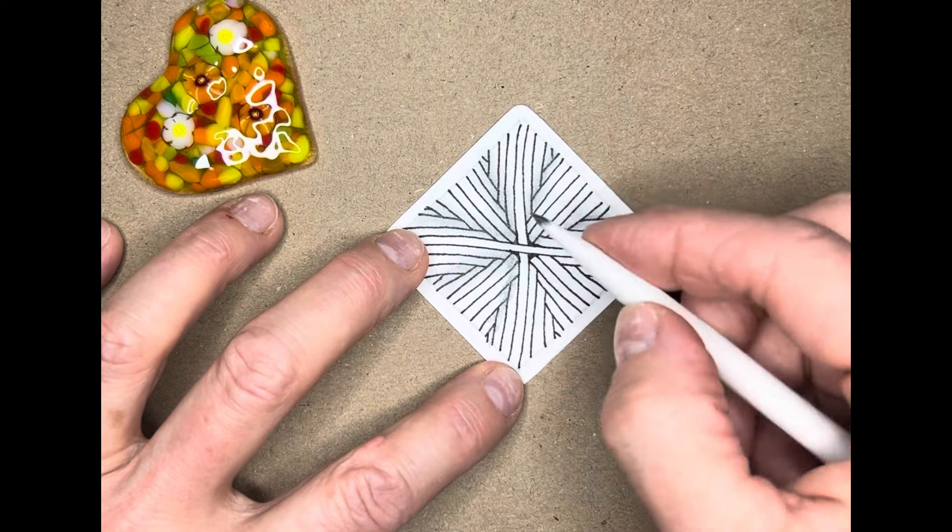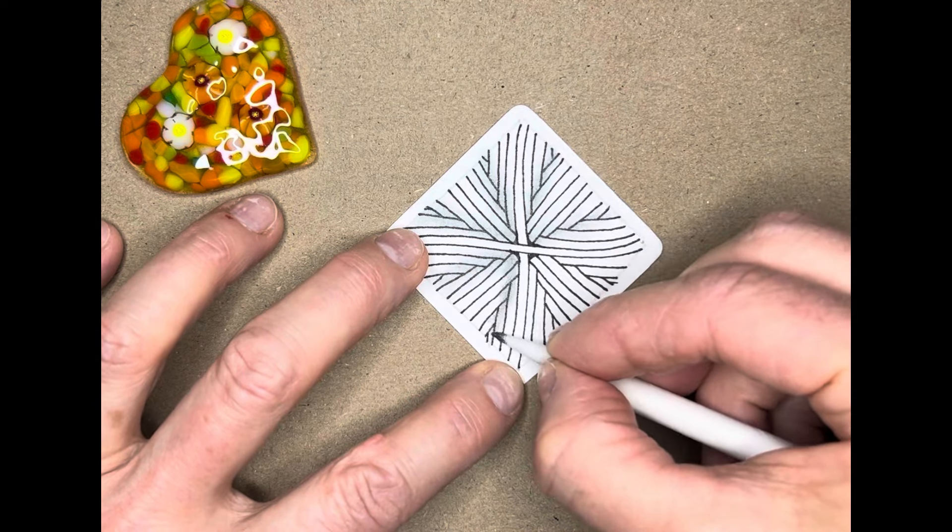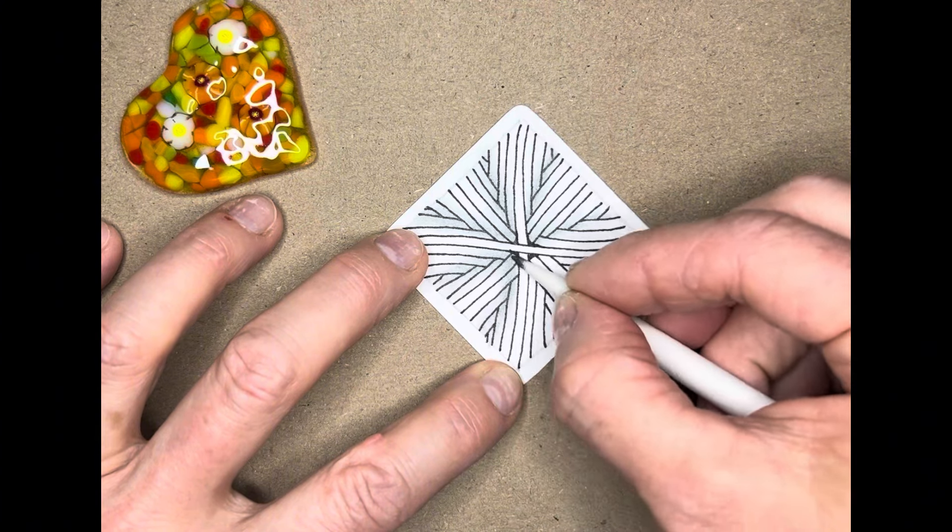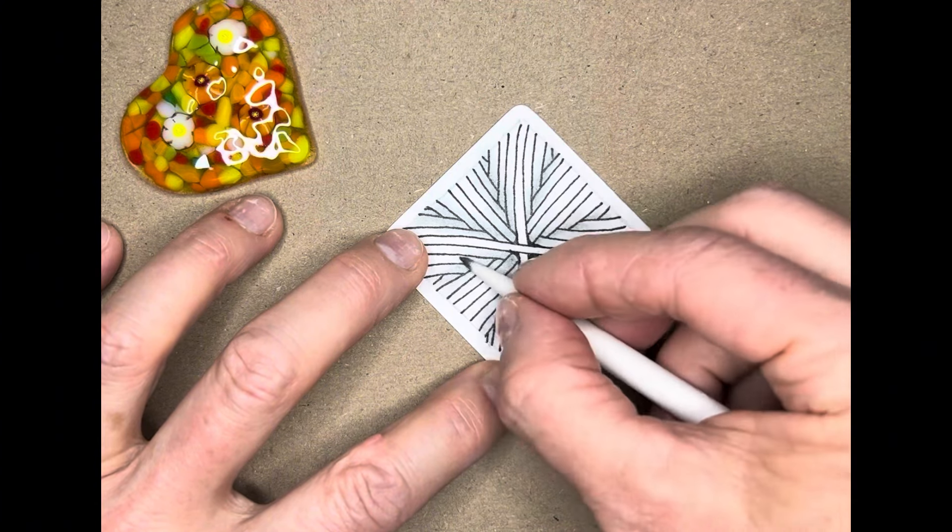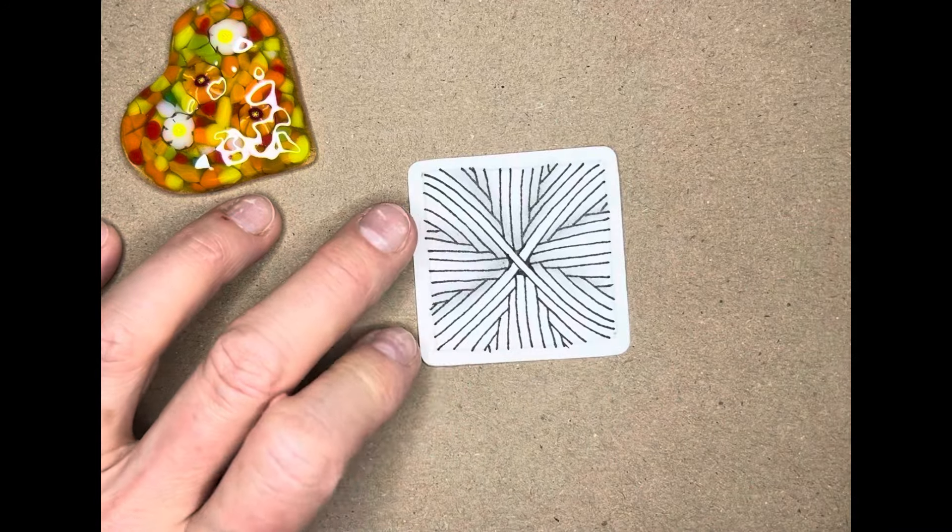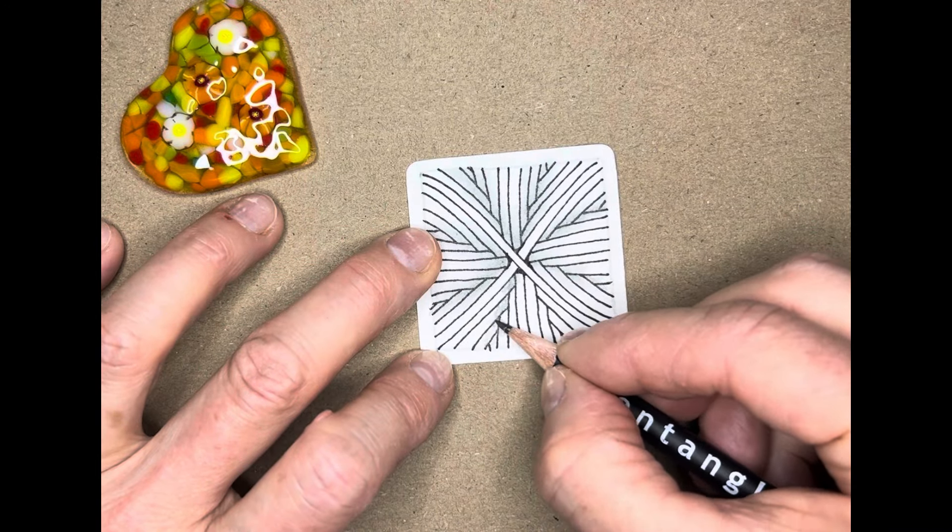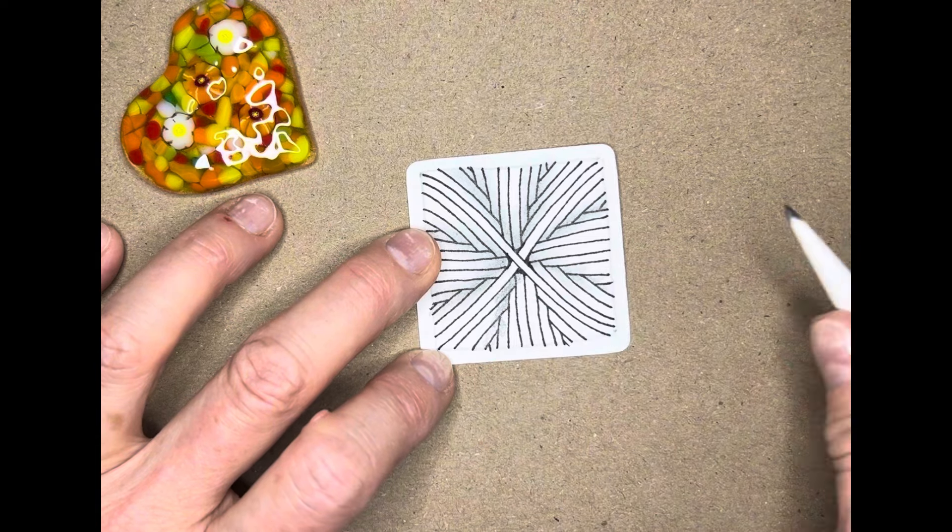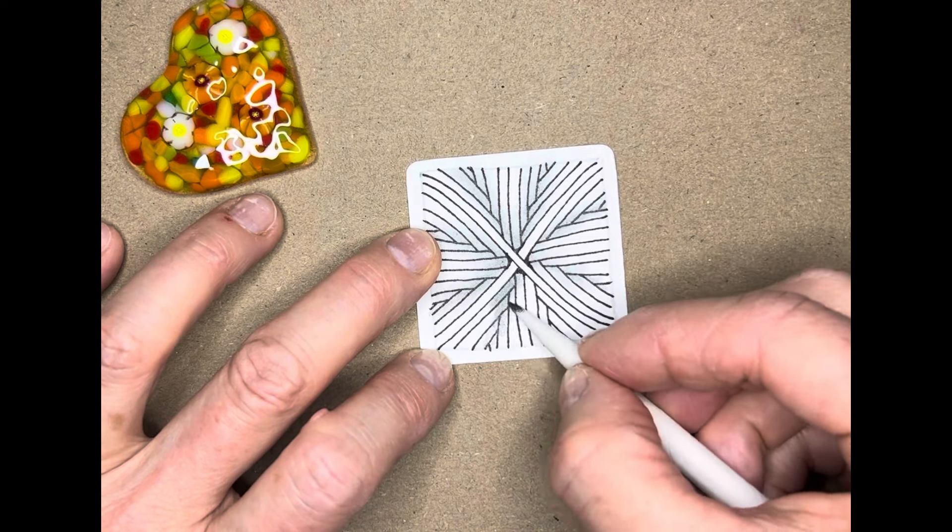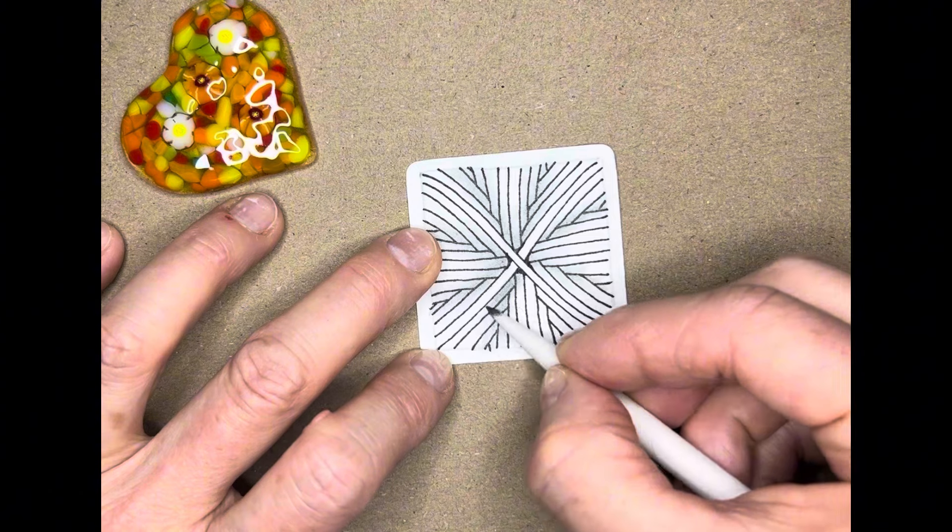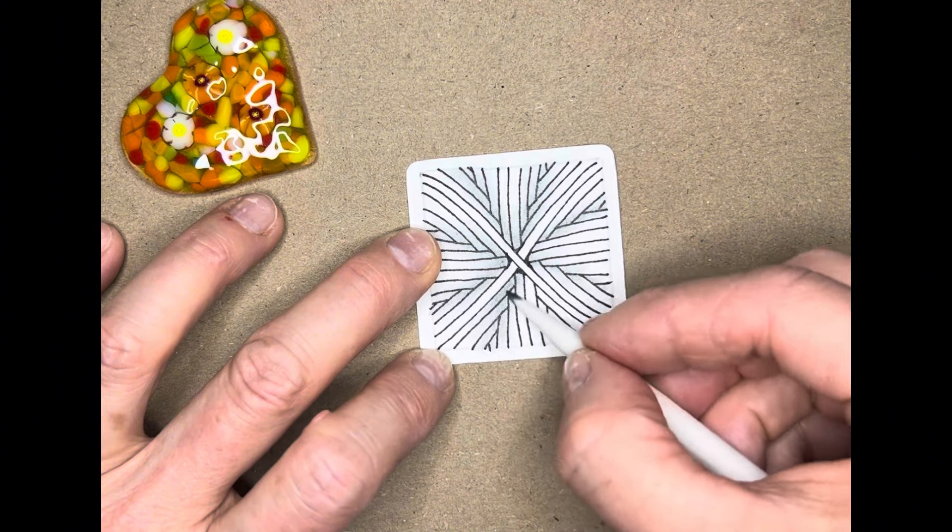And so you can tangle just some little pieces without having to set aside a lot of time. You can maybe have, if you've got a larger piece of paper and you don't have much time in your day, section it up and just add a little bit.